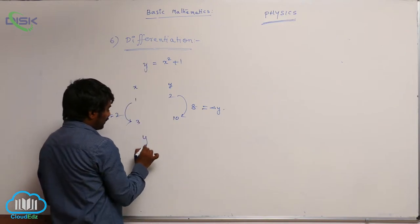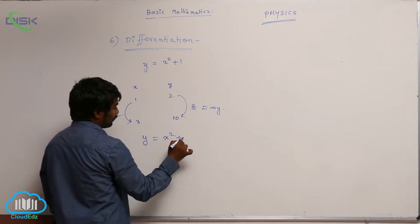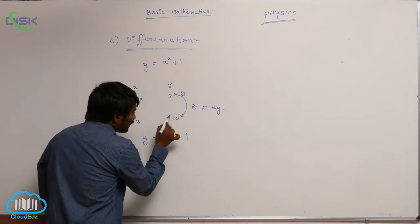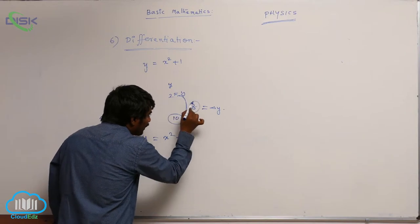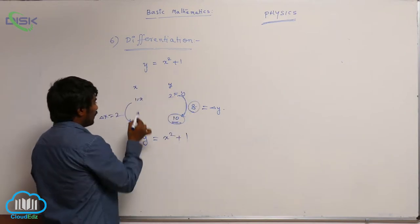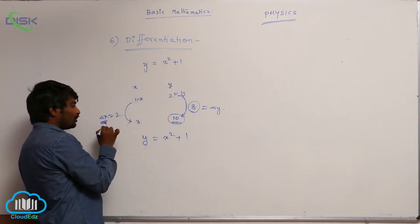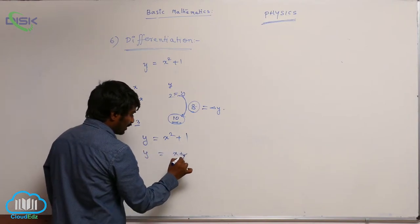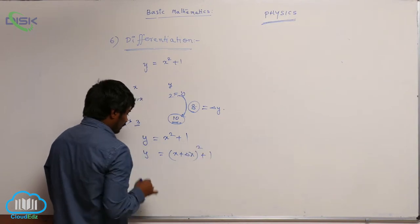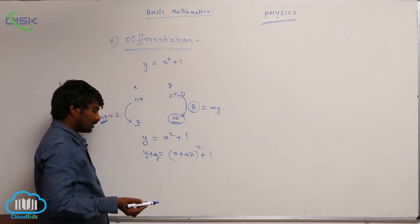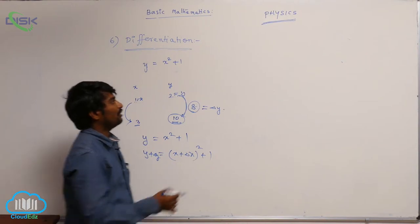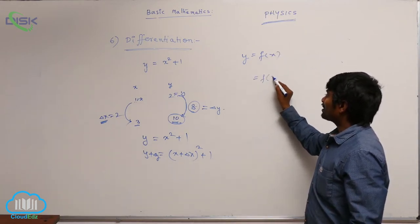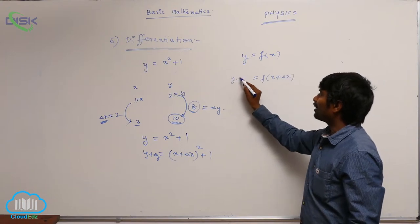Here, y equals f(x) equals x squared plus 1. So for a given x value, we get y. If x increases by delta x, giving x plus delta x, then the new y value becomes y plus delta y. In general, for any equation y = f(x), substituting x plus delta x gives y plus delta y.